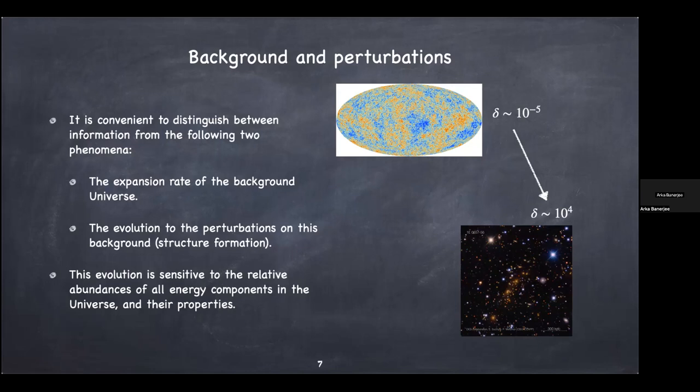If you've taken GR, you'll know that gravity is sourced by what's in the universe — what components are present, how they behave, their relative abundances — all of these determine the map from the early universe to today. If we can understand what's happening between our universe being very young and today, we can learn a lot about the different energy components. This process is called structure formation, and if we understand it in detail, we can say more about dark energy, dark matter, and other fundamental questions.